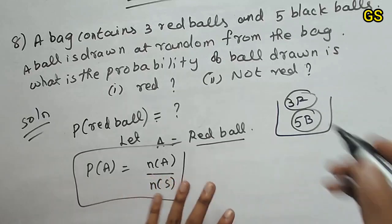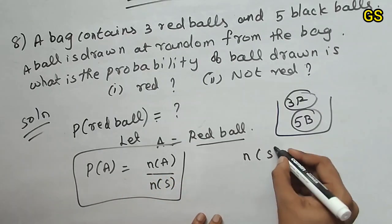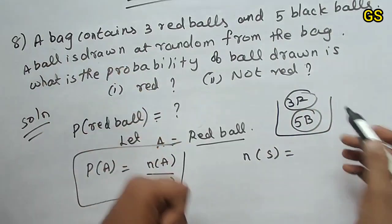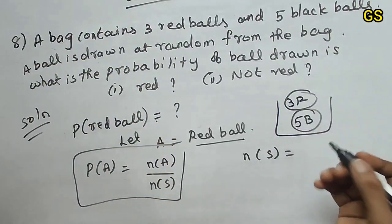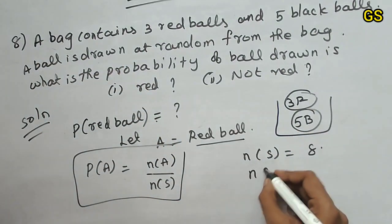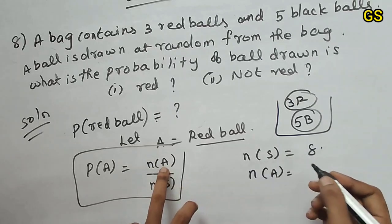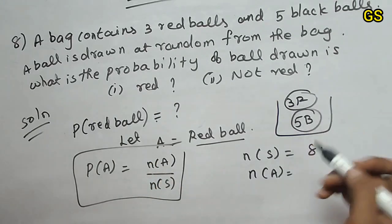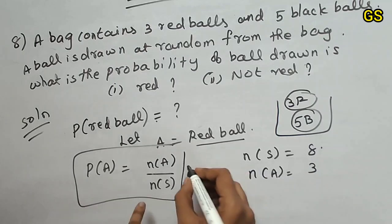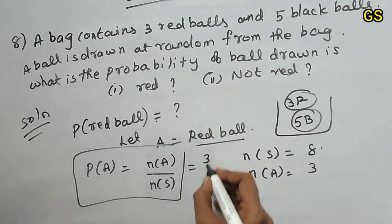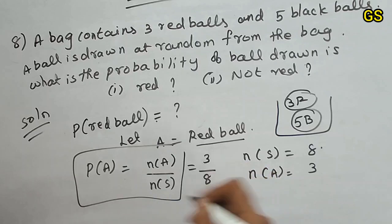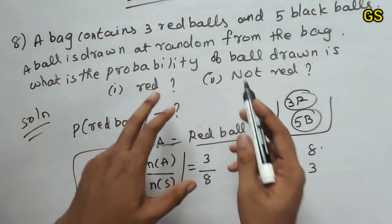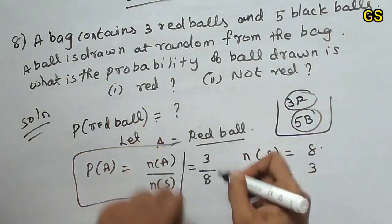P of A equals N of A by N of S. The sample space N of S is the total number of balls in the bag: three plus five equals eight balls. N of A is the number of red balls, which is three. Substituting, P of A equals three by eight. So the probability of a red ball is three by eight.